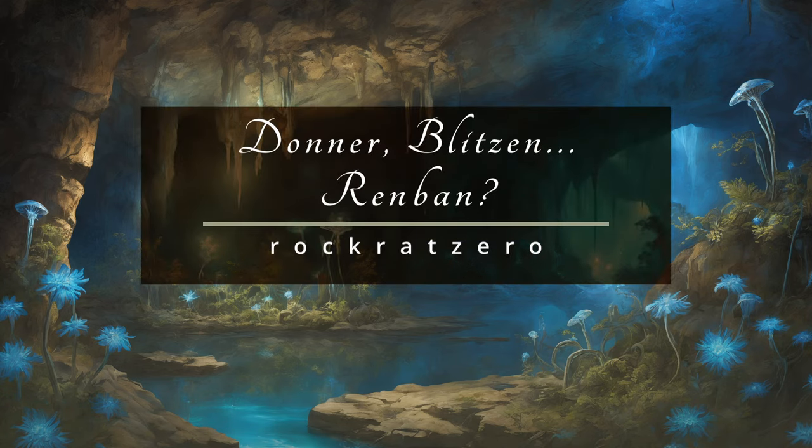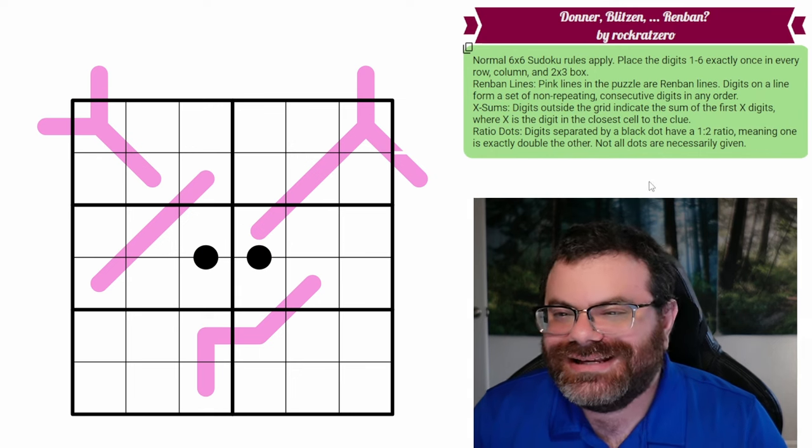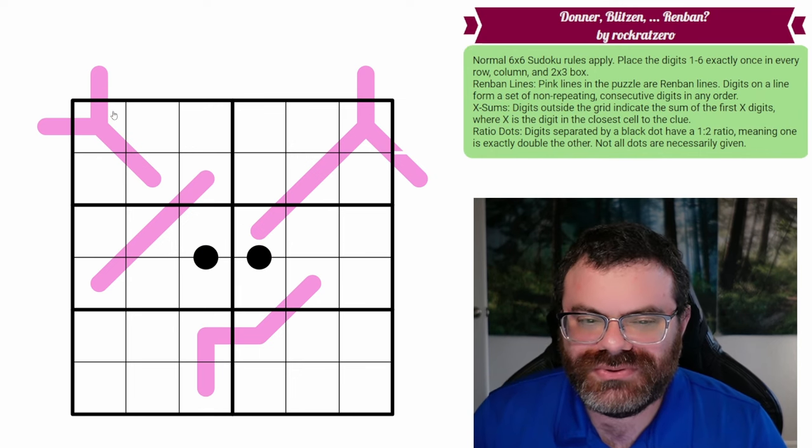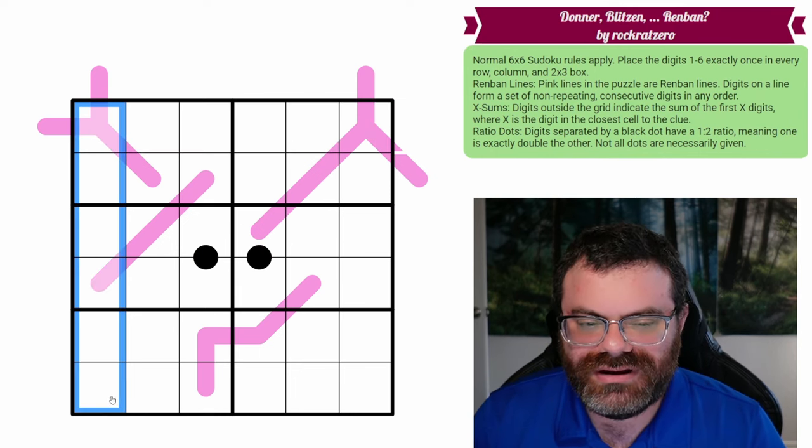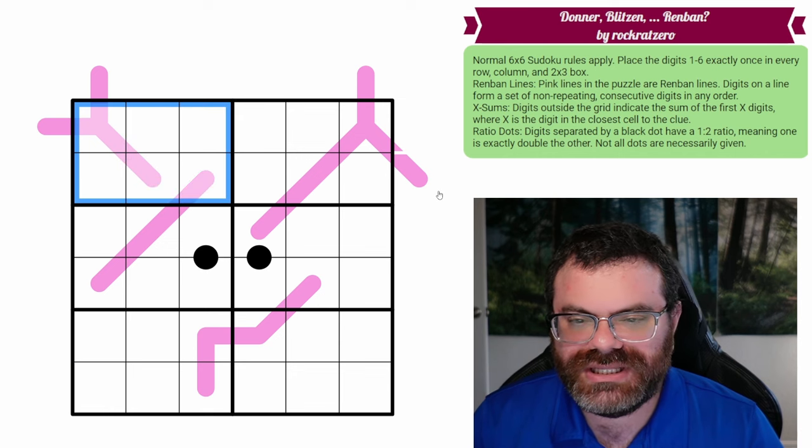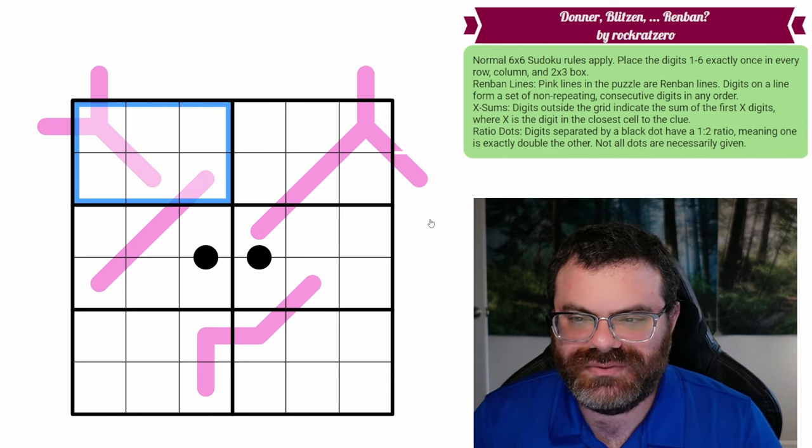Hello, let's continue our Sudoku adventure with Donner Blitzen Renband by RockratZero. We have normal 6x6 Sudoku rules, which means in every row, every column, and every 2x3 box, we are placing the digits 1 to 6 exactly once each.